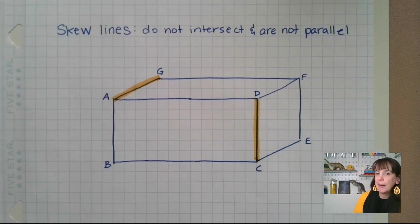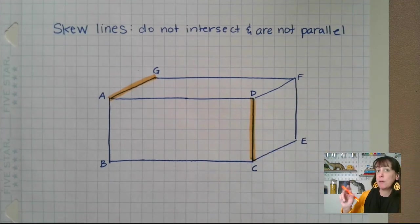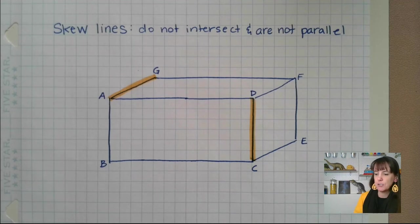If I wanted parallel lines, DC and FE would be parallel, and they would never cross, but they wouldn't be considered skew.